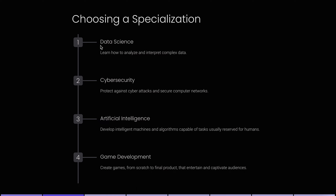The first specialization is data science. As a data scientist, what you'll be doing is analyzing and interpreting complex data to figure out future outcomes of certain things. For example, if you have data for specific flights and 100 of those flights have been delayed, you can infer that the next flight will also be delayed on the same day. That's a simple example.